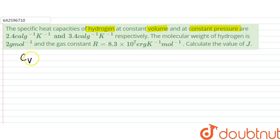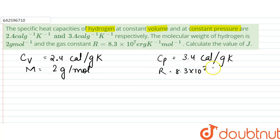So for hydrogen, Cv is given to be 2.4 calorie per gram Kelvin or degree centigrade. We can write Cp is 3.4 calorie per gram Kelvin. Molecular mass is 2 gram per mole. R is 8.3 into 10 to power 7 erg per Kelvin mole.